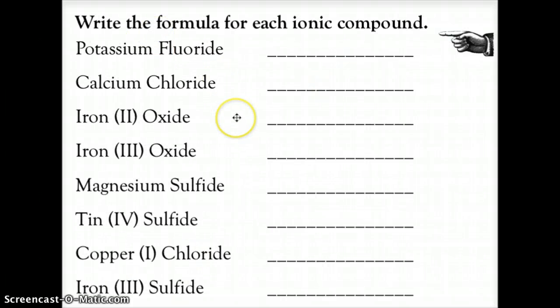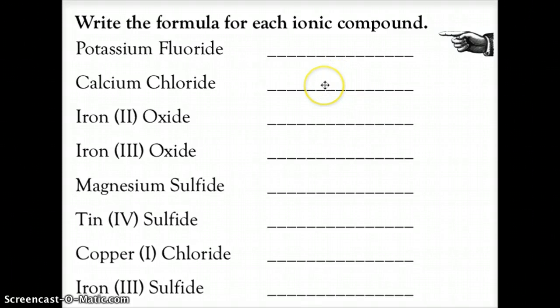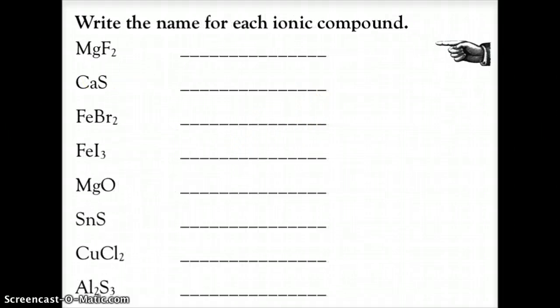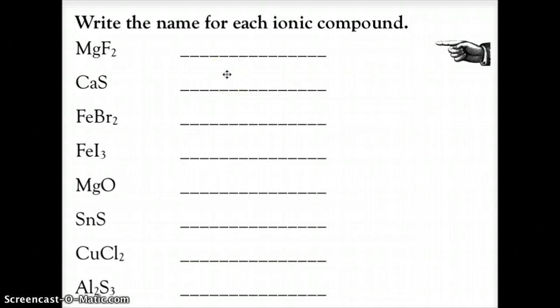There is a PDF with a series of ionic compounds. Go ahead and print it out and write the formula for each compound. The second page of the PDF has a series of formulas, and you'll write the name for each. Print those PDFs, fill them in, and then come back to see how you did.